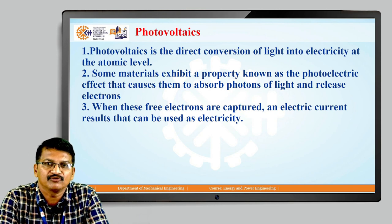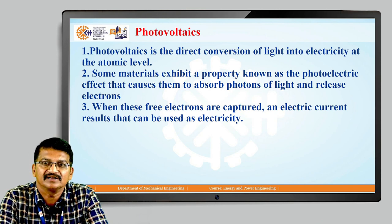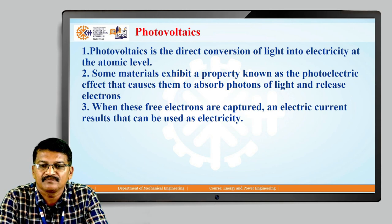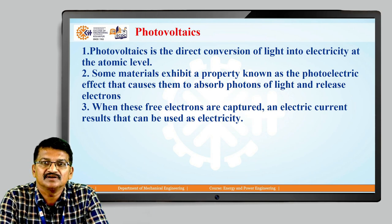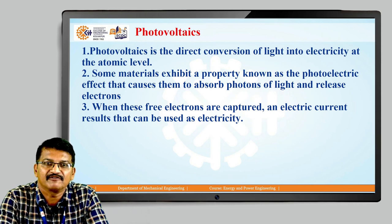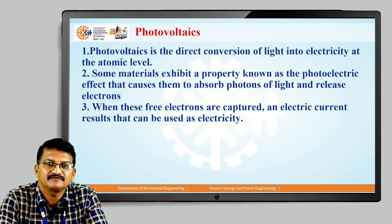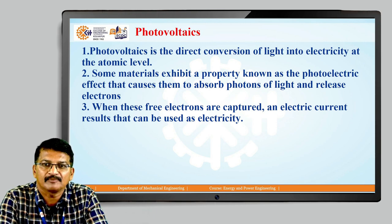Photovoltaic is the direct conversion of light into electricity at the atomic level. Some materials exhibit a property known as the photoelectric effect that causes them to absorb photons of light and release electrons. When these free electrons are captured, an electric current results that can be used as electricity.